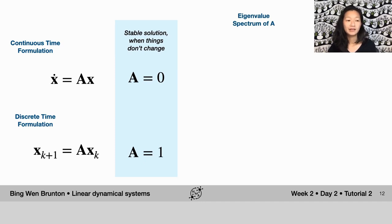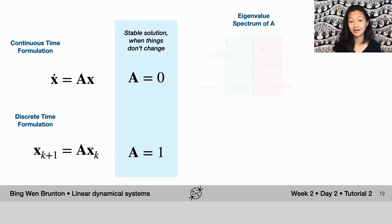When we're looking at the eigenvalues of A, which determines the stability of the discrete time formulation x dot equals A x, what we introduced in tutorial one is that if you plot the eigenvalue spectrum of A...